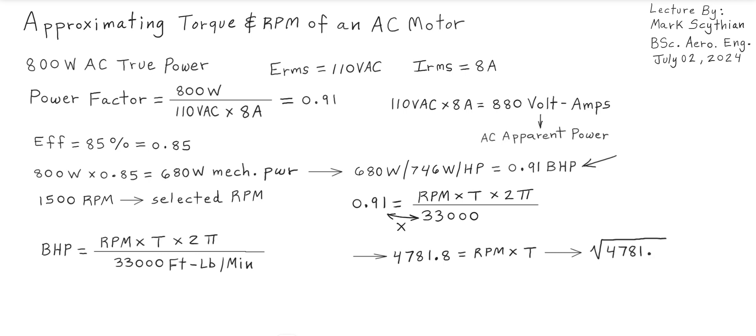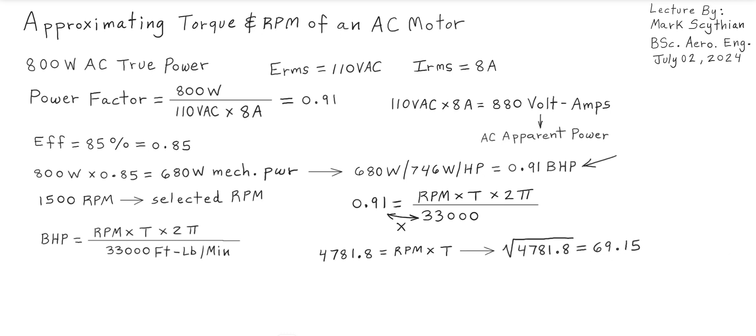RPM times T is a square function or product square function, so we can simply make RPM times T equal to the square root of 4781.8. From this geometric square value, we then have a foot-pound rating of 69.15 foot-pounds torque at 69.15 RPM.